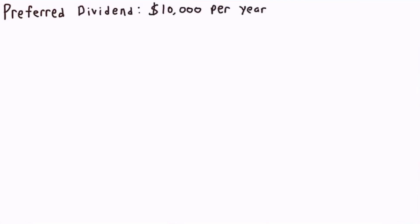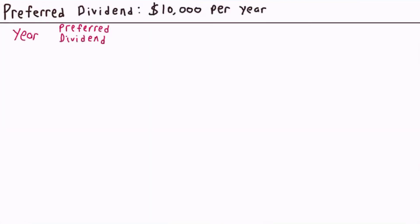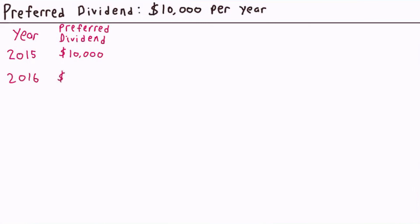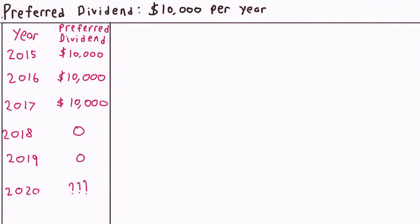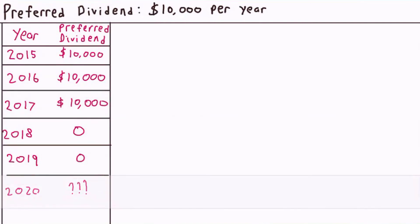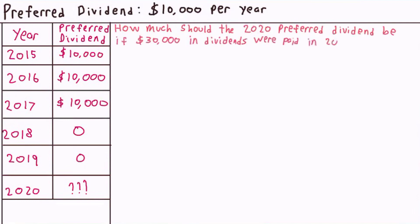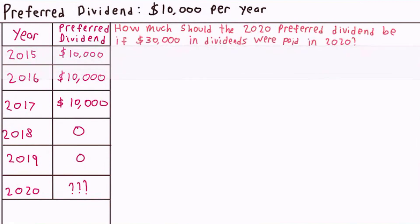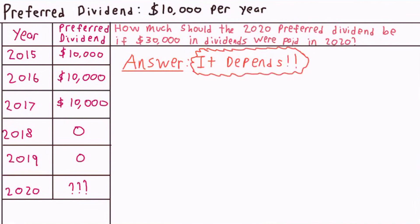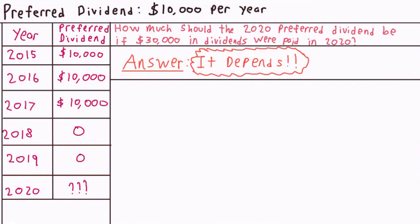Let's suppose that a corporation pays a $10,000 preferred dividend, and for the past several years the dividend has been paid. Let's say that in 2018 and 2019, no dividends were paid. If the company were to pay $30,000 in dividends in 2020, how much should the preferred shareholders get? Should it be just the $10,000 because that's the yearly amount, with the rest going to common stock? Or should the company make up for the missed years and pay the entire $30,000 to preferred shareholders?